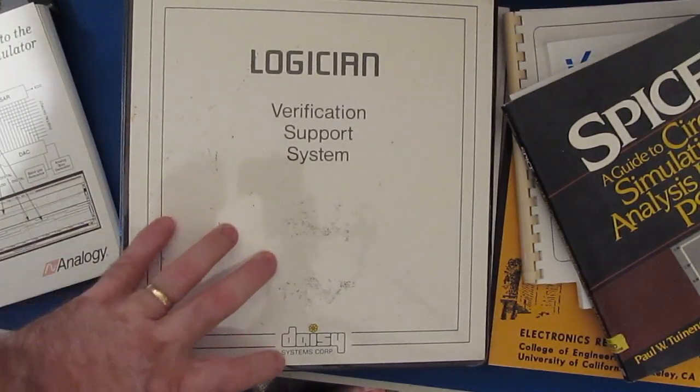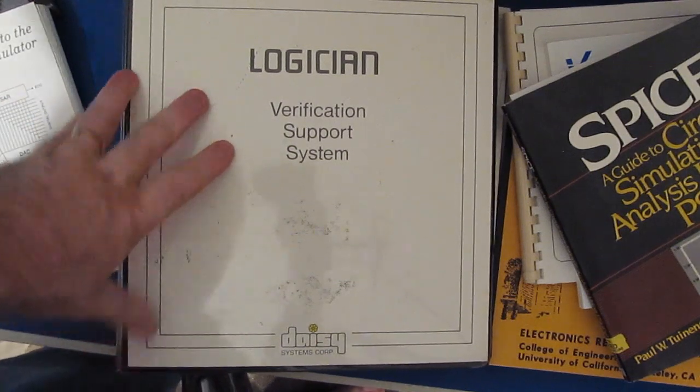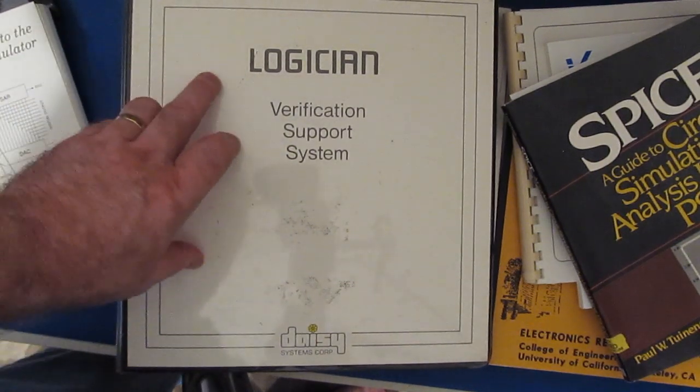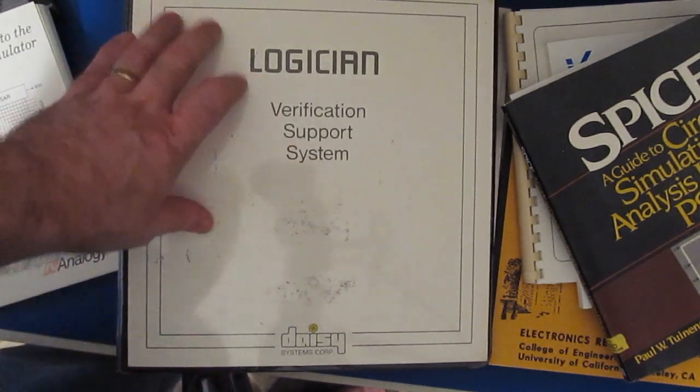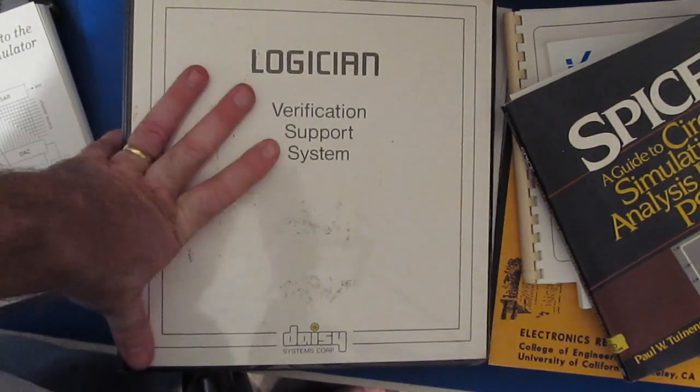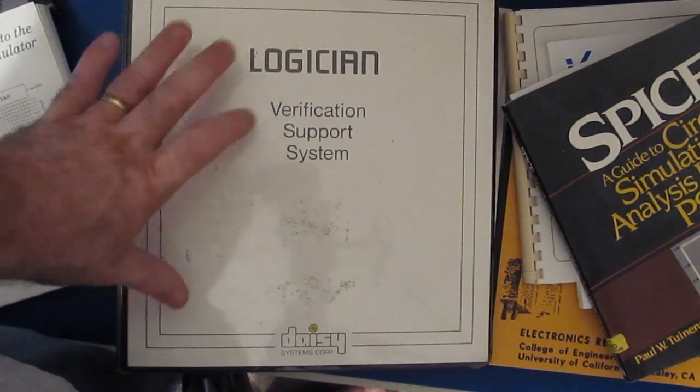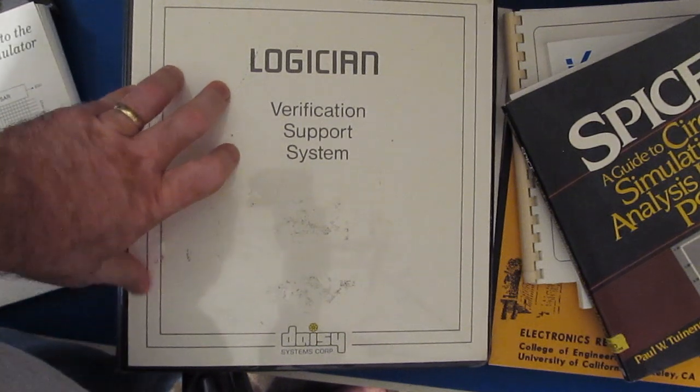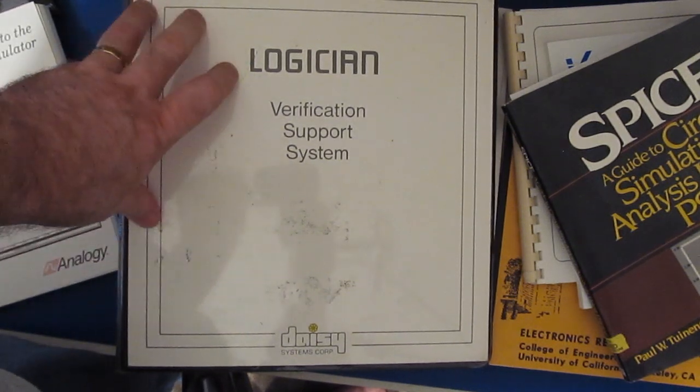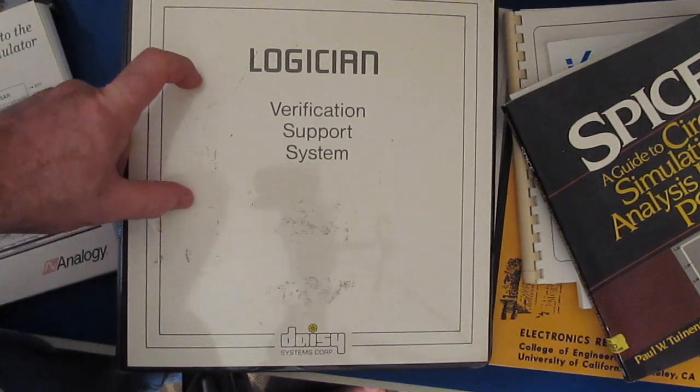This simulator was sold by Daisy Systems Corp. This was the first mixed mode simulator I had ever seen. There wasn't a separate simulator for the analog as well as the digital. They were combined together into one simulator. One of the key features was this having a hardware simulator. This had a VME chassis that it was running on. It was physically a separate box that you could actually plug an IC into.